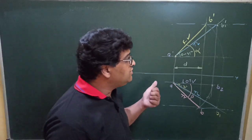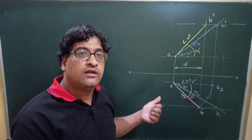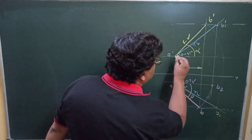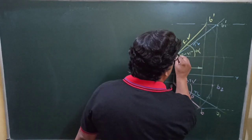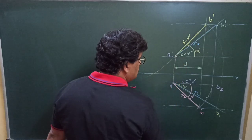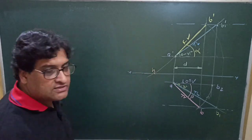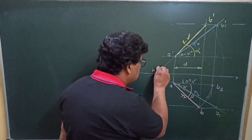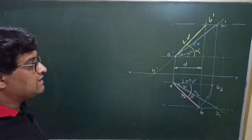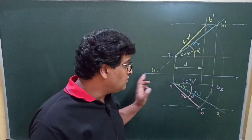So let us start the process. There are basically two methods to find HT and VT: one is the extension of projections method, and another is the trapezoidal method we discussed in the projection of points. Let us first attempt the first method. In the first method, what we do is extend the front view towards the XY line, so that it cuts the XY line at a point — say small h-dash. This h-dash is nothing but the front view of the horizontal trace. So initially we are obtaining the horizontal trace, and to get it you have to extend the front view towards the XY line.